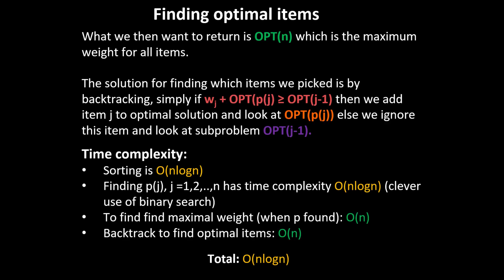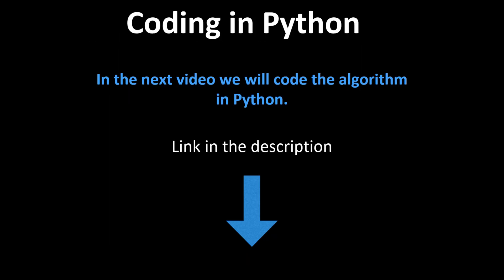For the time complexity: sorting by finish time is O(n log n). Finding p(j) for each j is also O(n log n) with a clever use of binary search — the straightforward approach would be O(n²), so be careful when implementing. Finding the maximum weight given the p vector and sorted order is linear time, and backtracking to find optimal items is also linear. So the total time complexity is O(n log n). Now that we understand the algorithm, we're ready to implement it in Python — check out the next video.